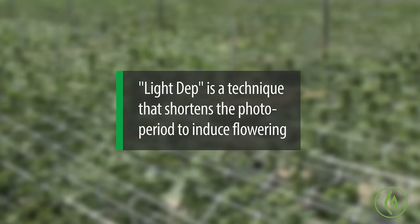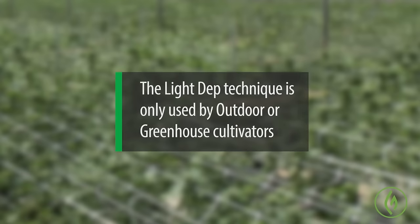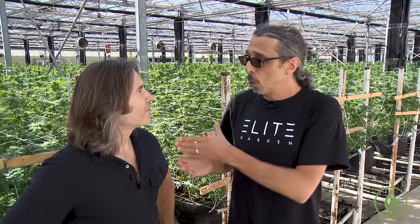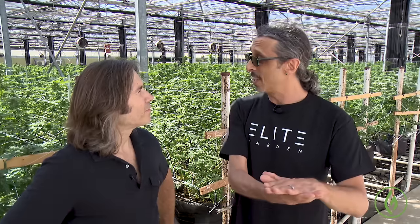In an outdoor environment, there's a technique called light deprivation. Light deprivation gives you the ability to flower the plants when you want and not wait for 12 hours of darkness naturally. You can get multiple harvests outdoors by simply pulling shades and drawing them back to block out a few extra hours of light at the end of the day, so that instead of getting 12 to 14 hours of light and only eight hours of darkness, you trigger flowering by light deprivation.